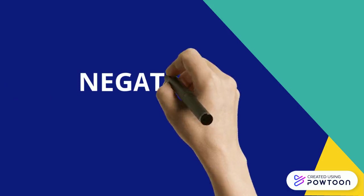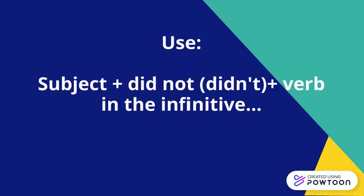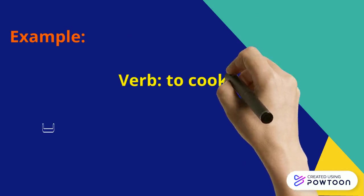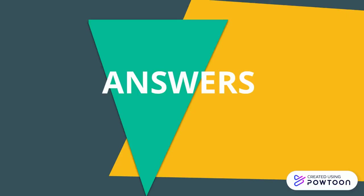Negative form: Use subject plus did not, or didn't, plus verb in the infinitive. Example — verb 'to cook': I didn't cook beans yesterday. Or: I did not cook beans yesterday.